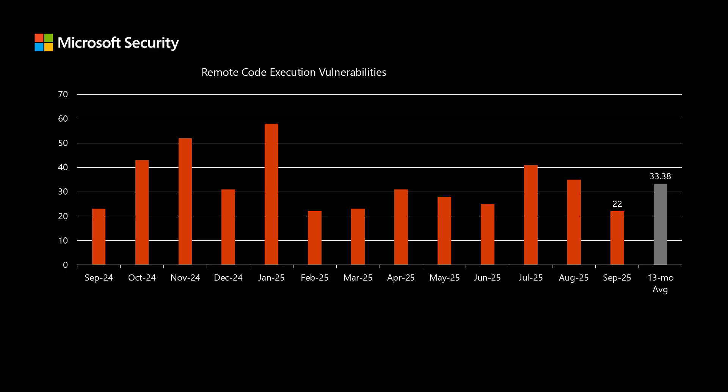Remote code execution vulnerabilities are the type of impact that typically provides the most risk. This would allow a threat actor to install software on endpoints and other high-level actions.